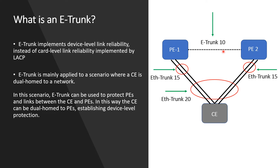E-trunk is mainly applied to a scenario where a CE is dual-homed to a network. Without an E-trunk, a CE connected to only one PE using a single Ethernet trunk would face loss of connectivity if that link fails. But with a multi-chassis LAG setup, even if one Ethernet trunk interface goes down on the CE or PE side, the other link can easily take over. This way E-trunk protects PEs and links between CEs and two PEs, providing device-level protection instead of just link-level protection.